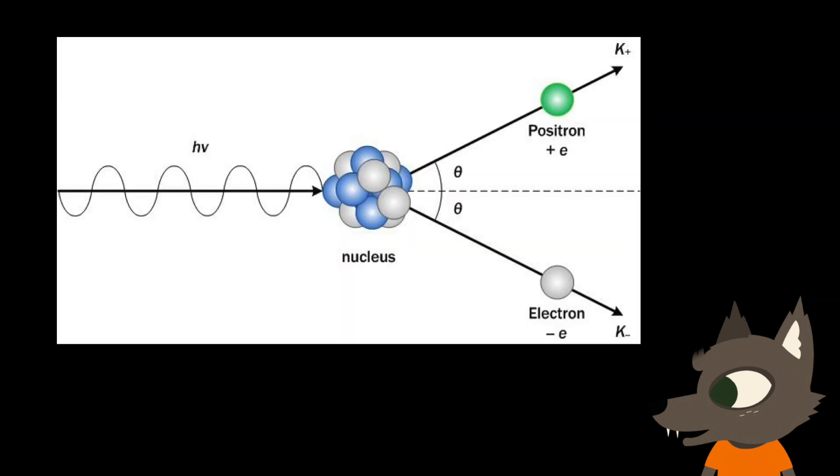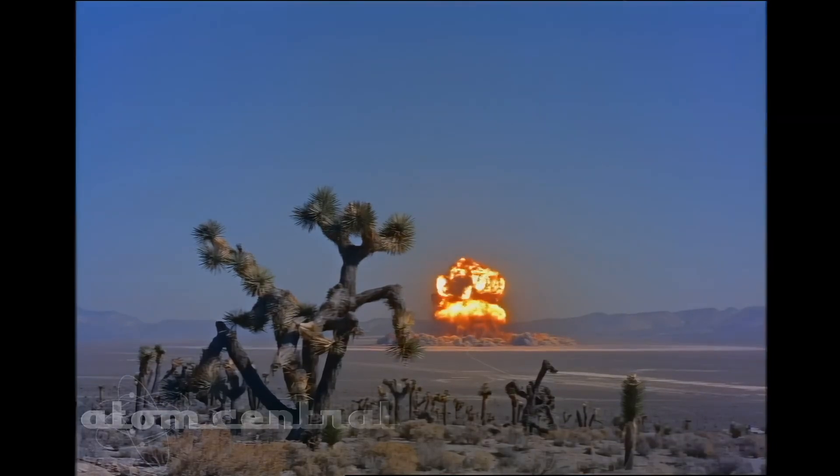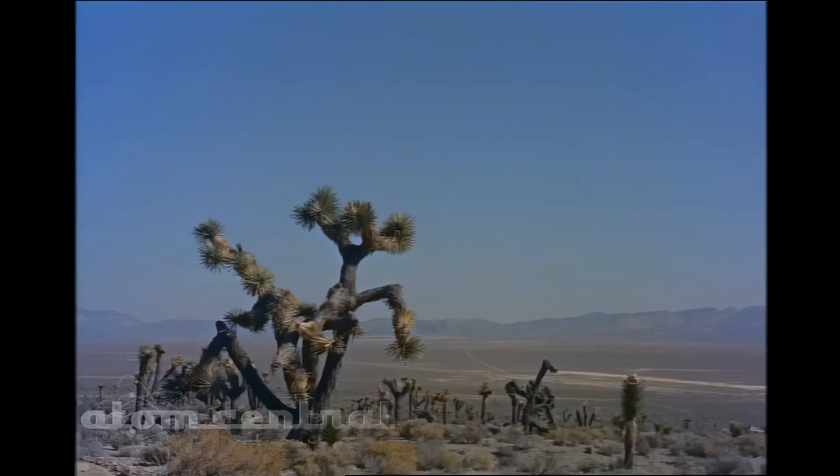It's also possible to produce positrons directly from energy through a process called pair production, where an extremely high-energy gamma ray converts some of its energy into a positron-electron pair when in the presence of heavy atomic nuclei. I find this super interesting, because it's creating mass out of energy alone, like reversing a nuclear explosion.